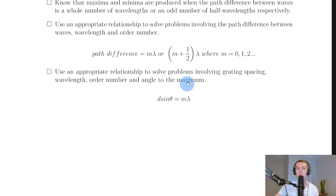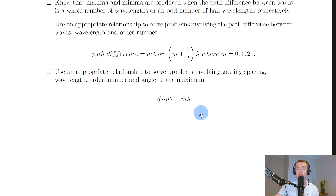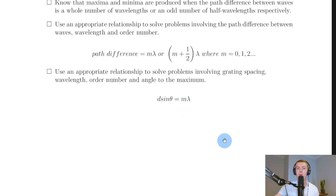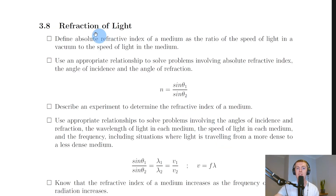Lastly for interference, you need to use the grating equation to solve problems involving grating spacing, wavelength, order number, and angle to the maximum. That equation is d sinθ = mλ, where d is your slit separation, θ is your angle to the maximum, m is your order number, and λ is your wavelength.